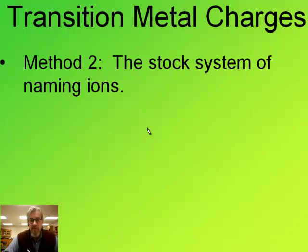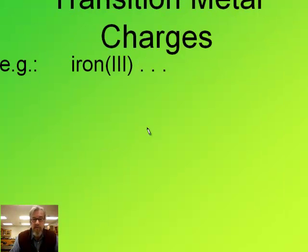The second method is used if we have a name rather than a formula. This is called the Stock system. In the Stock system of naming ions, a Roman numeral is placed after the name of the metal in parentheses to indicate its charge. So, for example, iron with a Roman numeral three is Fe with a three plus charge.